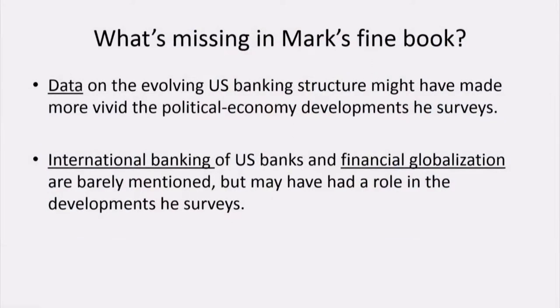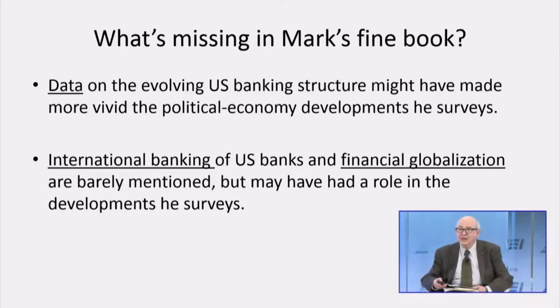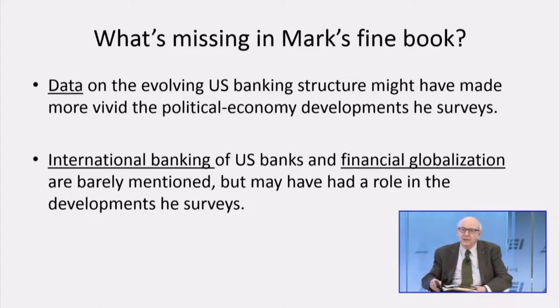What might have been in the book and isn't there? One of the things that's missing is a lot of numbers. I'm an economist; Mark's a historian — and we're very good friends for a couple of decades. Economists like data, and you won't find a lot of data in the book. There's a huge change in American banking that's what the book is about, taken place over five or six decades. But Mark talks about the political economy of it without much data, and the international dimension of changes in banking is also missing.